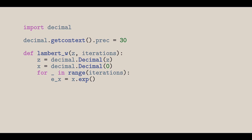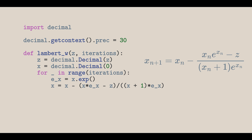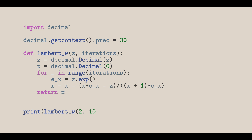Then we do the main computation and return x. Newton's method has quadratic convergence, which means after each iteration the accuracy should double. So we can estimate the amount of iterations it would take logarithmically.